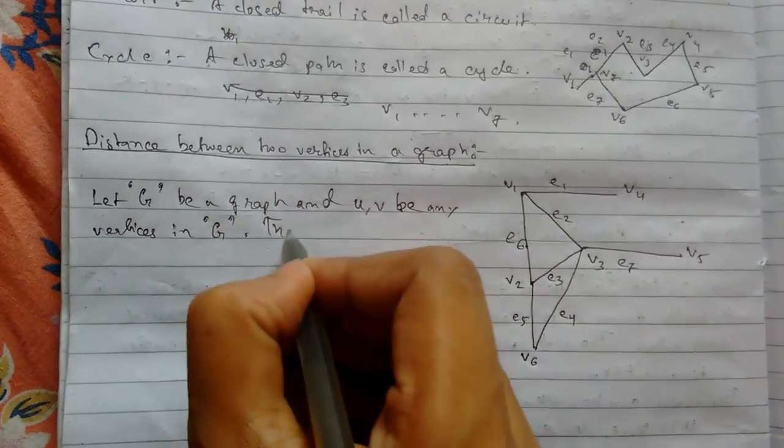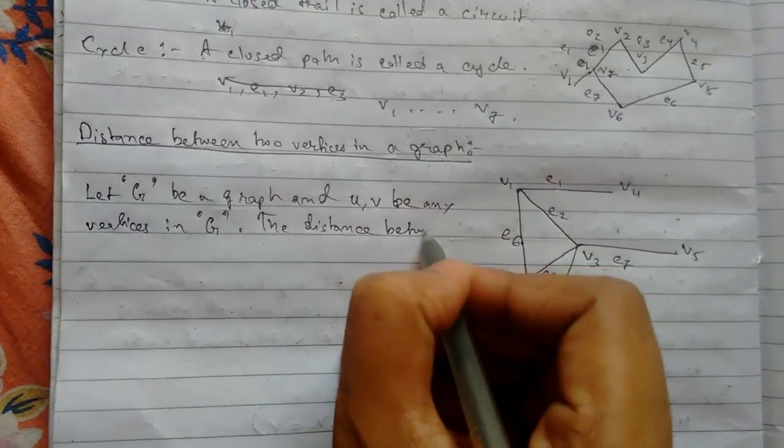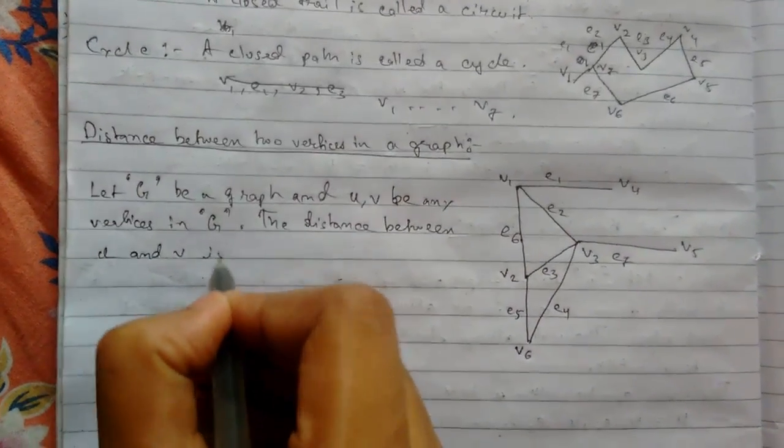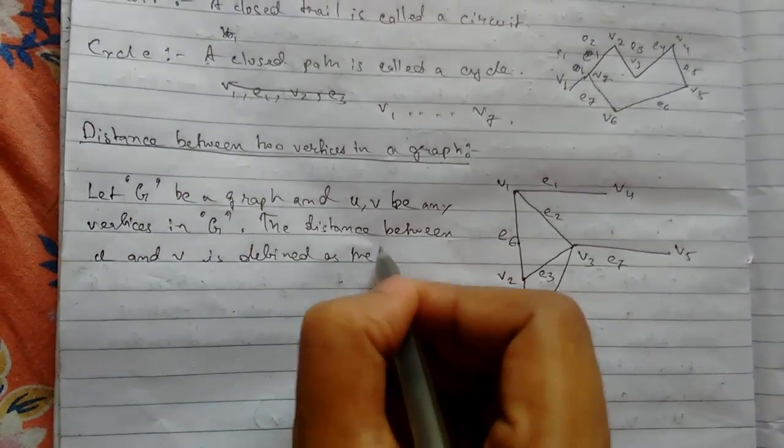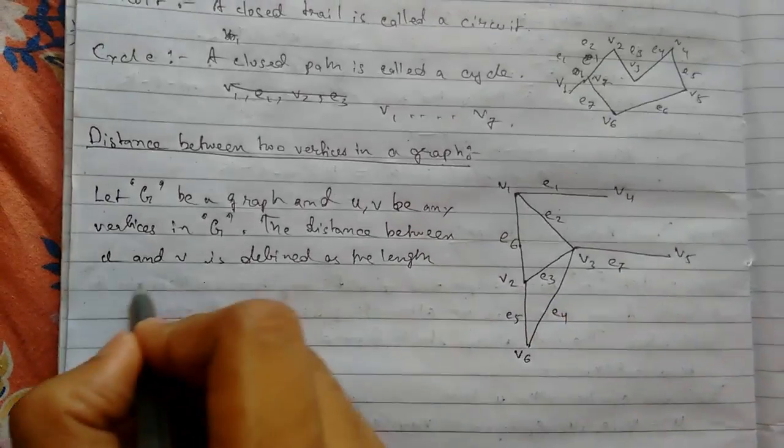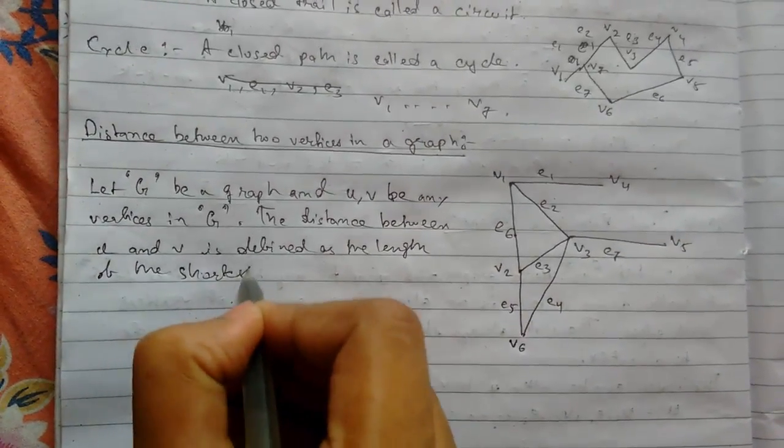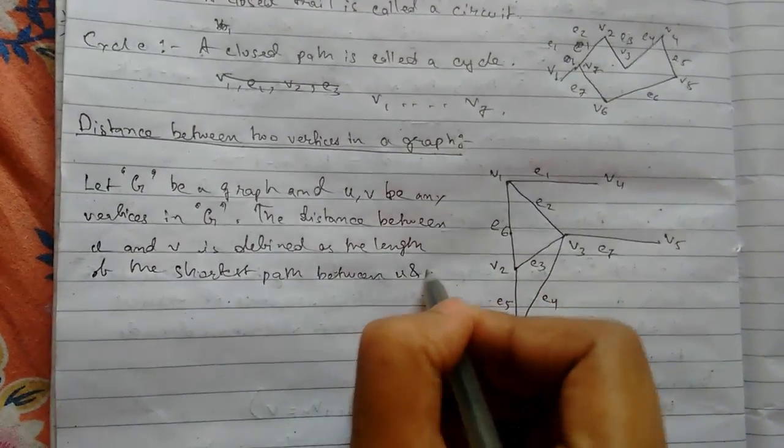The distance between u and v is defined as the length of the shortest path between them, between u and v.